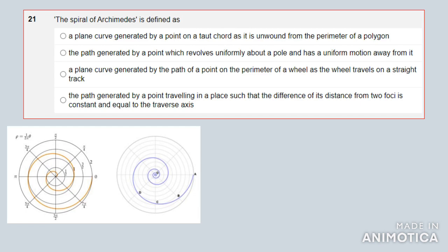It is a generated path from a point which goes around the pole. Let's say the center point of this circle is the pole, and it has a uniform motion away from the center. As you can see, it is revolving about the point while also going away from the point at a constant velocity.